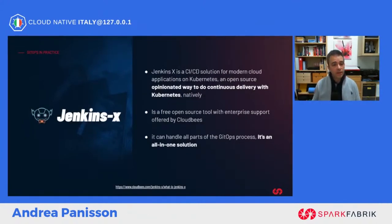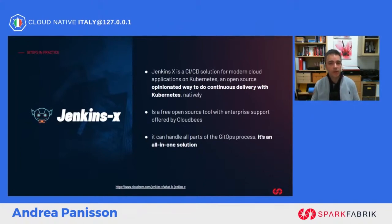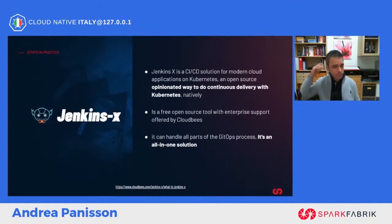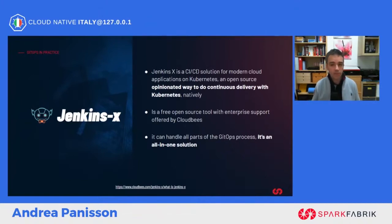Another actor is Jenkins X, a CI/CD solution for modern cloud native applications based on Kubernetes. It is not a single product but a package of preconfigured tools installed automatically in an opinionated way. The installation is managed by a command-line tool that, through a guided procedure, gives you a preconfigured platform for CI/CD in a short time — covering everything from continuous integration to deployment in the Kubernetes cluster using the GitOps methodology. It is an open source project that also offers enterprise support and is an all-in-one solution for CI, delivery, and deployment.